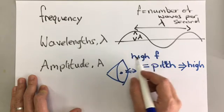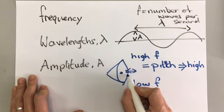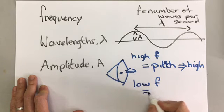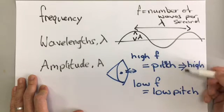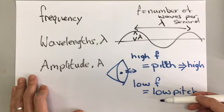If you have a sound wave with a very low frequency, meaning that the speaker is going backwards and forwards very slowly, that's a low pitch. So a high frequency would give a high pitched sound and a low frequency would give a low pitched sound.